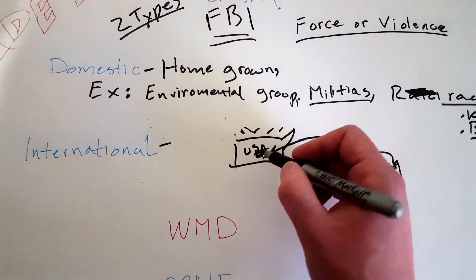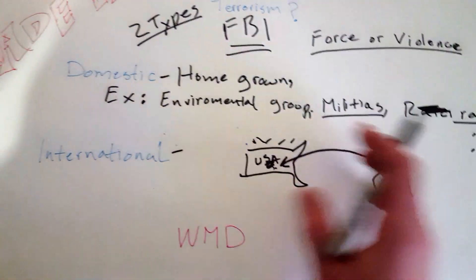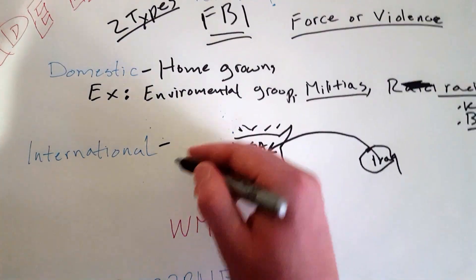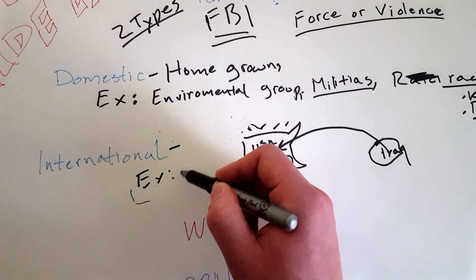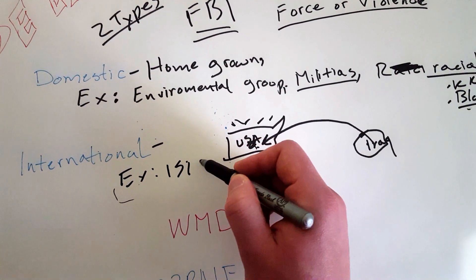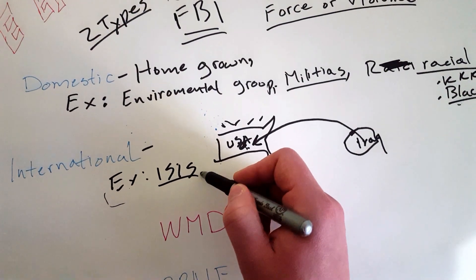So international terrorism or terrorists are just people that use force or violence on a nation or region that they are not a part of originally. That's the difference between these two. A good example of this could be ISIS. That's the big one nowadays. And then Al Qaeda is another one.